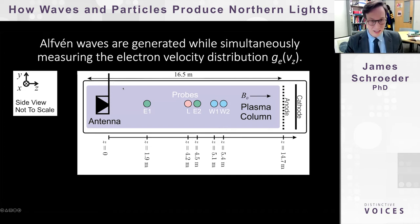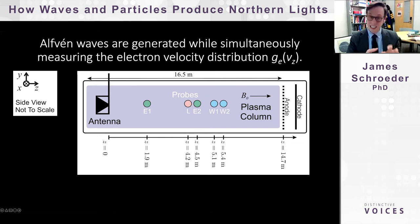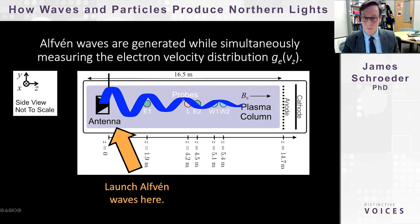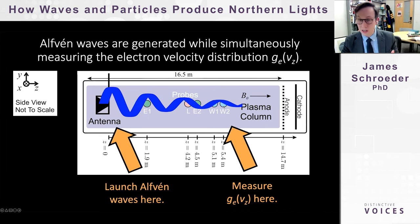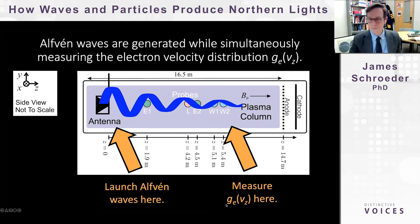In our LAPD setup, we create Alfvén waves — the same type found above auroras in space — and simultaneously measure the electron velocity distribution. We create Alfvén waves that travel through the plasma, then further from the antenna we measure how electrons respond to the Alfvén wave by recording what's called the electron velocity distribution, often given the symbol f sub e.